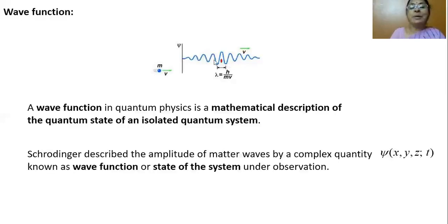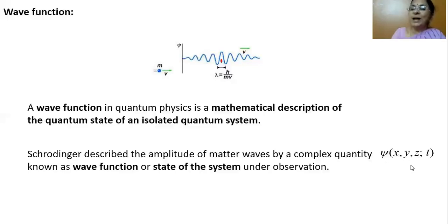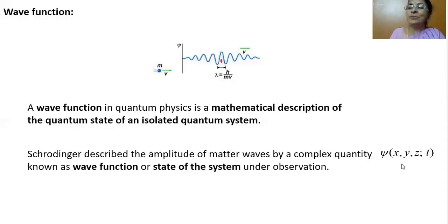Schrödinger described the amplitude of these matter waves by a complex quantity psi of x, y, z, and t, known as the wave function. The other name for wave function is the state of the system under observation. If you have taken an electron as an isolated system under observation, then this wave function describes the state of the system under observation. Now if you look at psi of x, y, z, t — x, y, z represents space and t represents the fourth dimension of this universe. Thus the wave function psi involves space and time. Schrödinger thus included the fourth dimension also into the wave function.